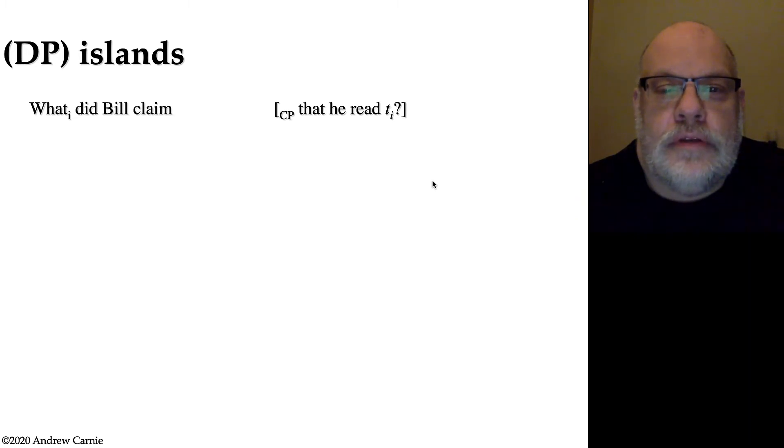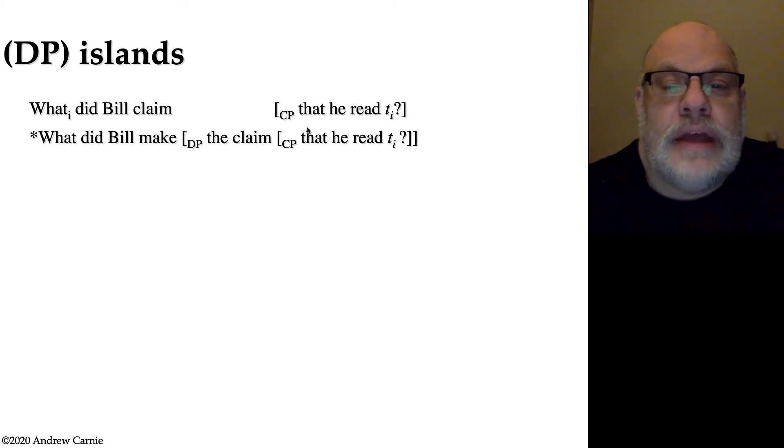But when we switch this to the other construction, where we're making the claim, and this embedded clause is no longer the complement of the verb, but is a relative clause on the noun, the claim, things get quite different. This sentence becomes utterly ungrammatical. What did Bill make the claim that he read is not even remotely as grammatical as what did Bill claim that he read.